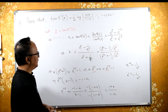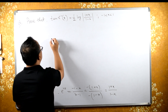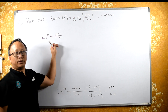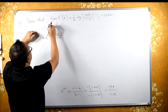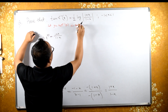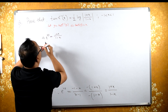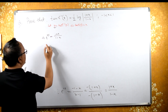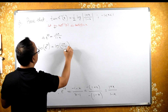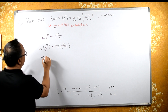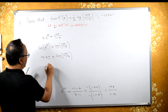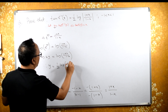So e^(2y) equals (1 plus x) upon (1 minus x). Our aim was to find y. Taking log on both sides: log(e^(2y)) equals log of (1 plus x) upon (1 minus x). The log and e cancel, giving 2y equals log of (1 plus x) upon (1 minus x). Therefore y equals (1/2) log of (1 plus x) upon (1 minus x).